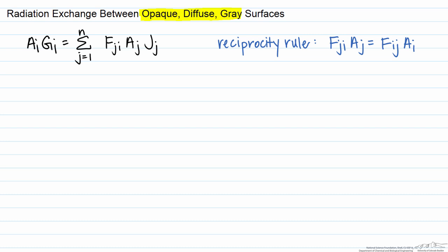This will allow us to cancel Ai from both sides of the equation. Now we're left with our irradiation equals the sum for j equals 1 to n, Fij times the radiosity from surface j.